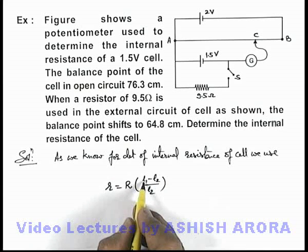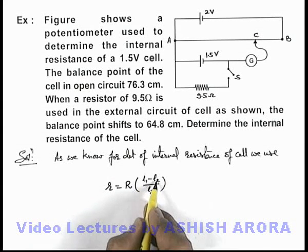Where l1 is the balancing length for the only cell and l2 is the balancing length when the external resistance is connected.